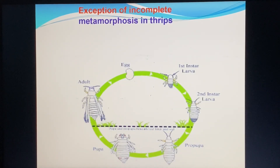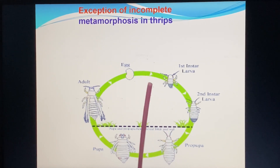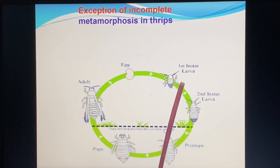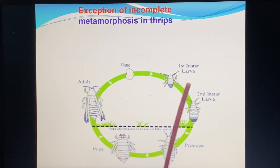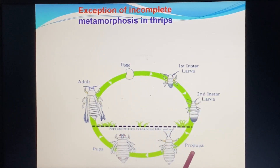In the incomplete metamorphosis group, there are no pupal stages — the stages are one, and then adult. In complete metamorphosis, there are four stages.